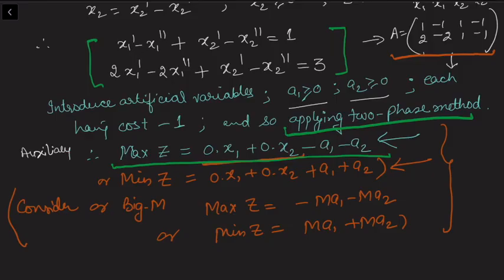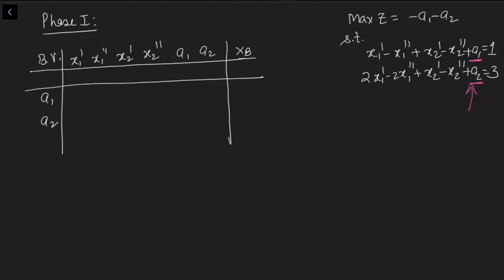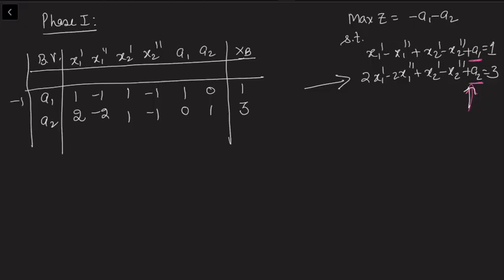Applying two-phase method, we construct the Phase 1 table. The initial basic variables are a1 and a2. Writing out the simplex table with columns for x1', x1'', x2', x2'', a1, a2: the constraint rows give coefficients 1, -1, 1, -1, 1, 0 and 2, -2, 1, -1, 0, 1 with right-hand side values 1 and 3. With artificial variable costs of -1 each, the z_j - c_j row computes to -3, 3, -2, 2, 0, 0 and the current z value is -4.